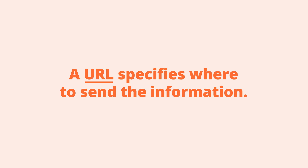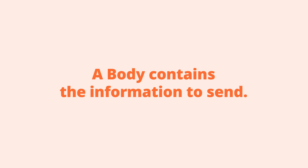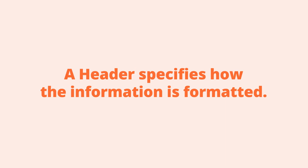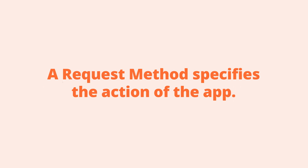HTTP requests from a webhook include four things: a URL specifying where you want to send the data, a body which has the information you want to send to another app, a header which will specify how the information in the body is formatted, and a request method which will specify what it wants the action app to do.